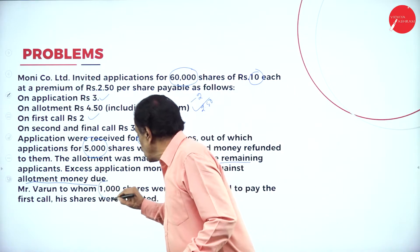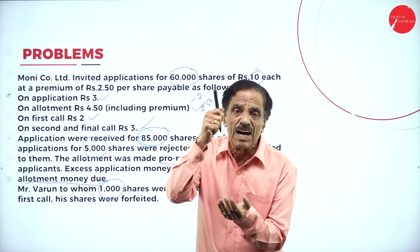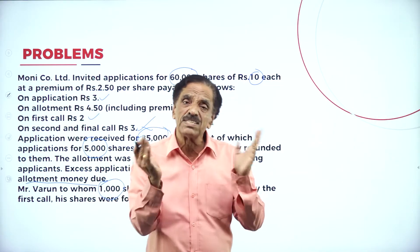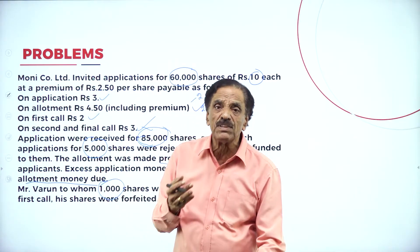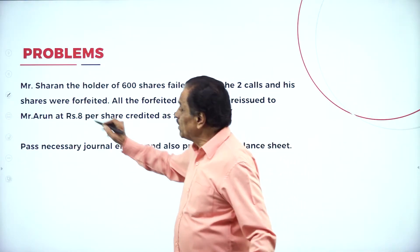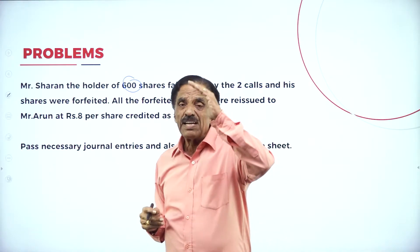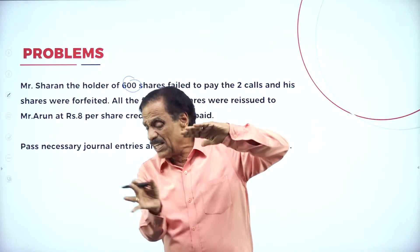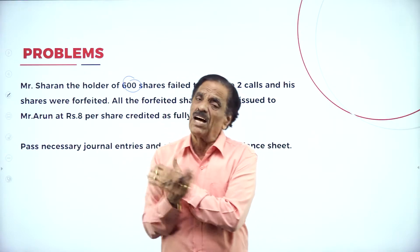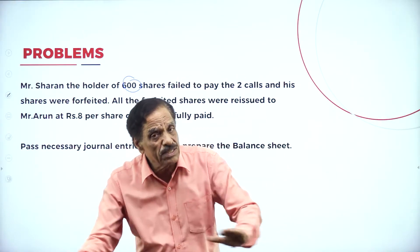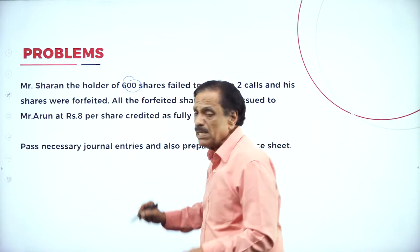Mr. Varun, who holds 1,000 shares, failed to pay the first call. His shares were forfeited — no chance given in the final call. He paid application and allotment but failed to pay the first call. Mr. Sharon, holder of 600 shares, failed to pay both the first call and the final call. A chance was given to him in the final call, but he failed both. His shares were also forfeited. The first man got no chance in the final call per the Companies Act; the second man failed both calls and his shares were cancelled.